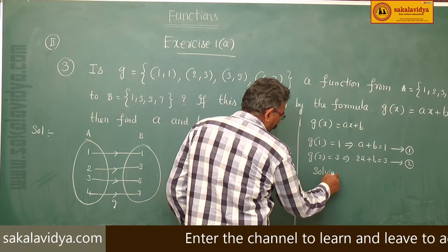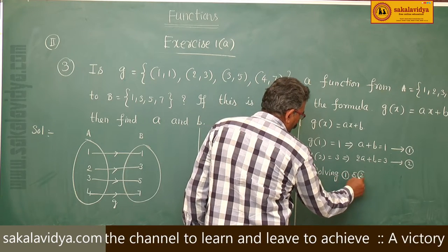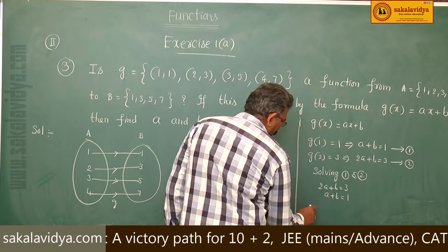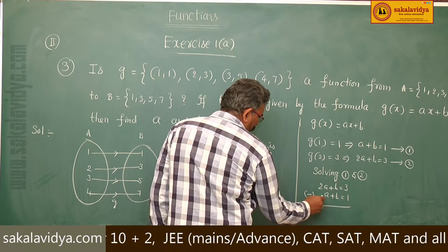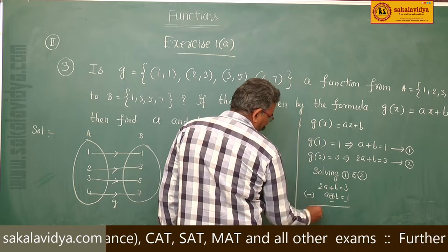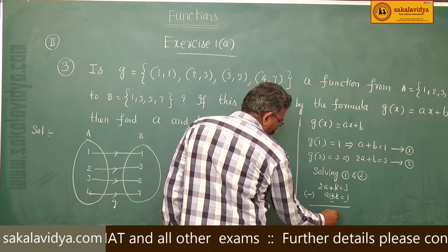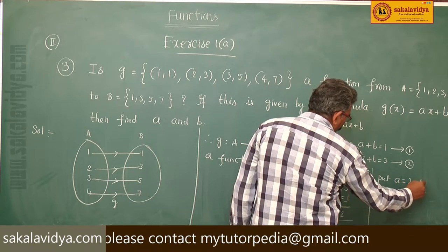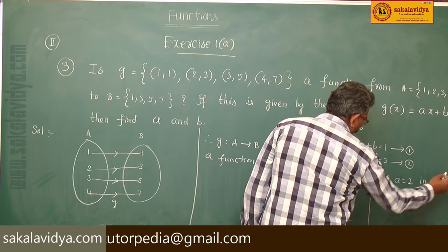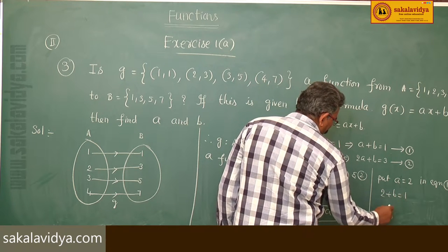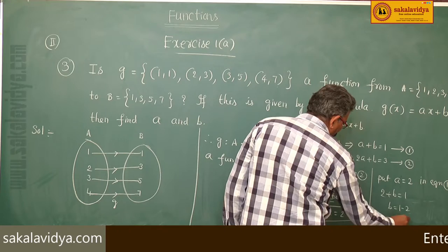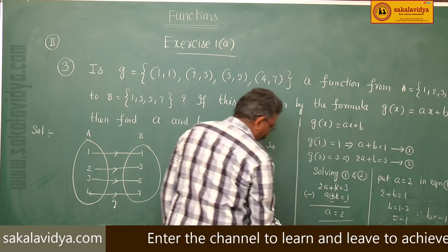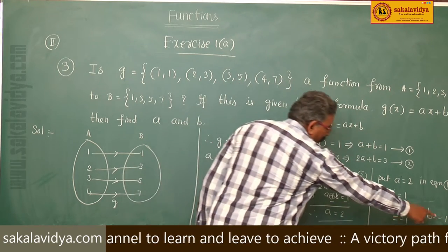Solving equations 1 and 2: subtracting (a + b = 1) from (2a + b = 3) gives a = 2. Substituting a = 2 into equation 1: 2 + b = 1, so b = −1. Therefore, a = 2 and b = −1.